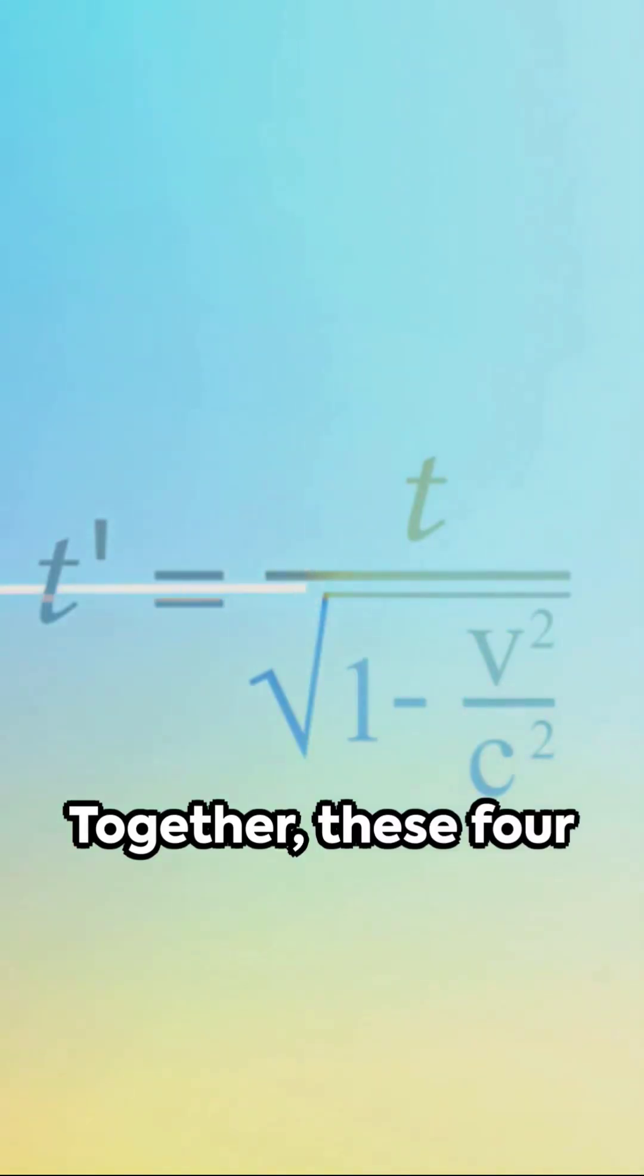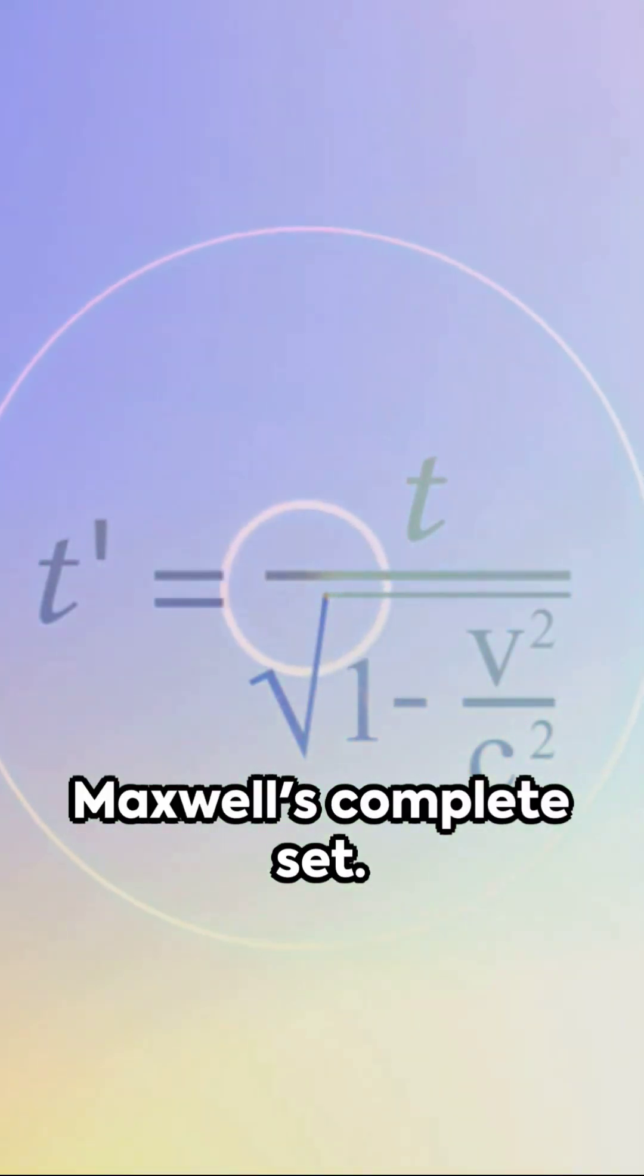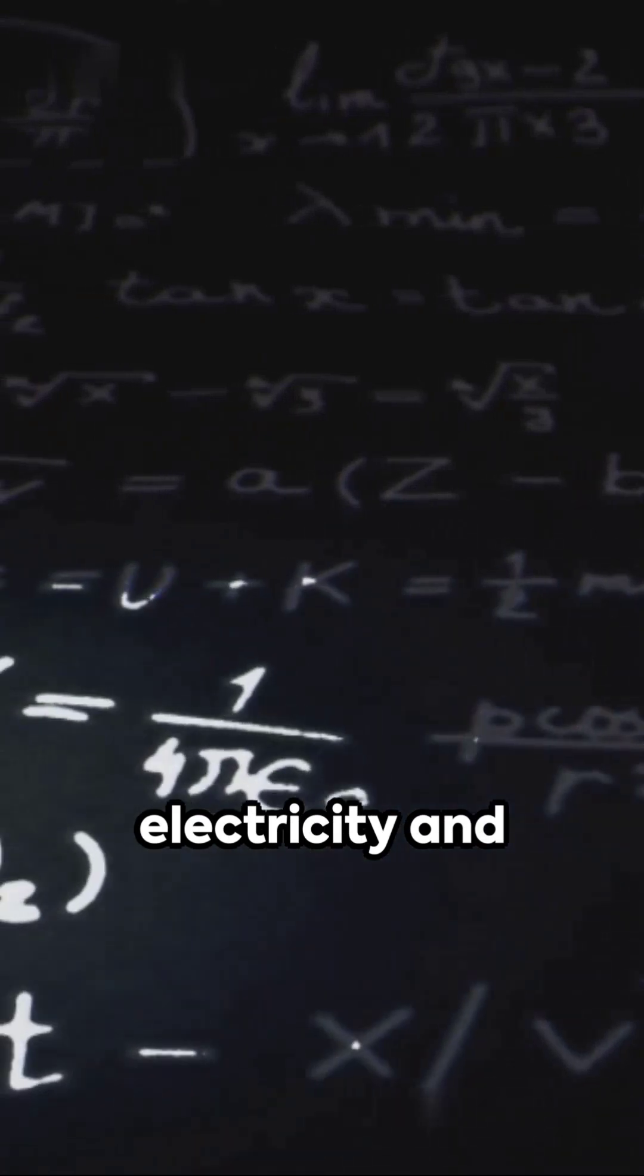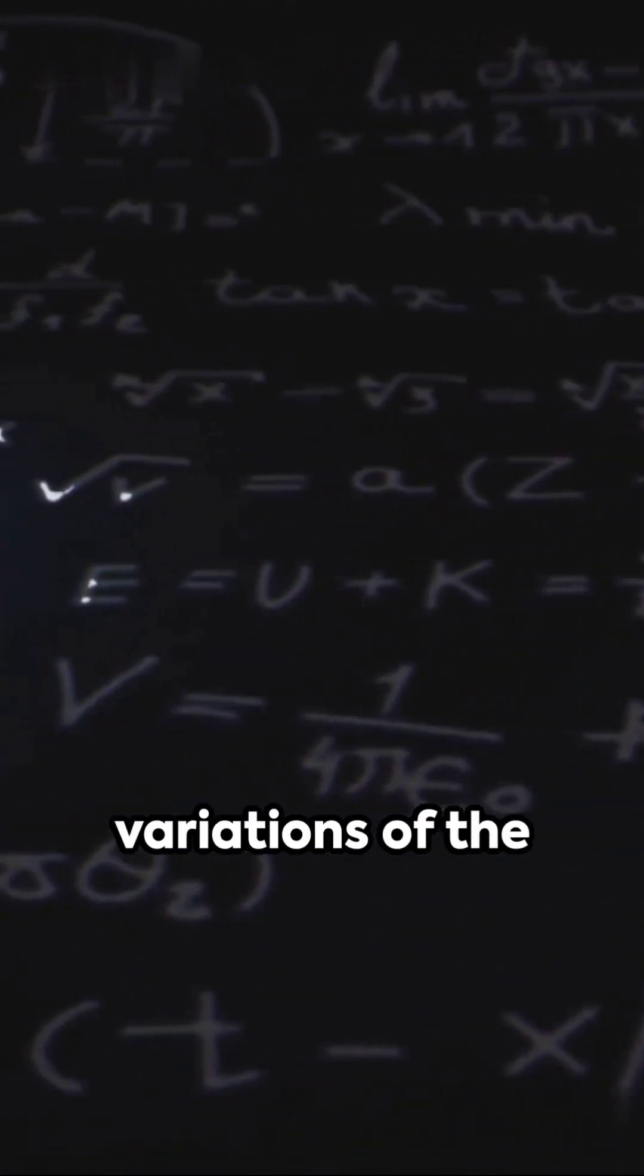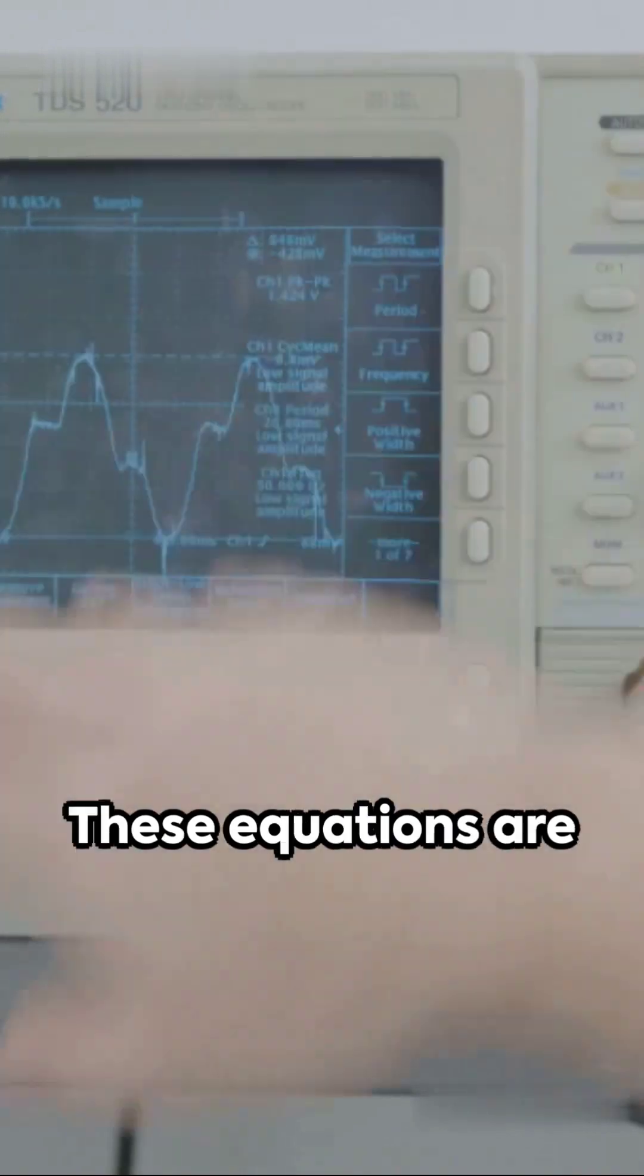Together, these four equations form Maxwell's complete set. They unify electricity and magnetism, showing variations of the same principle: electromagnetism.